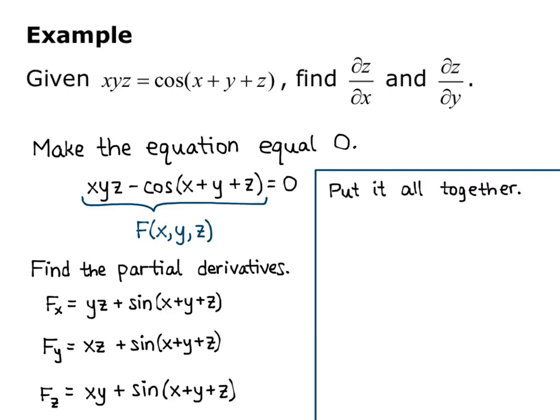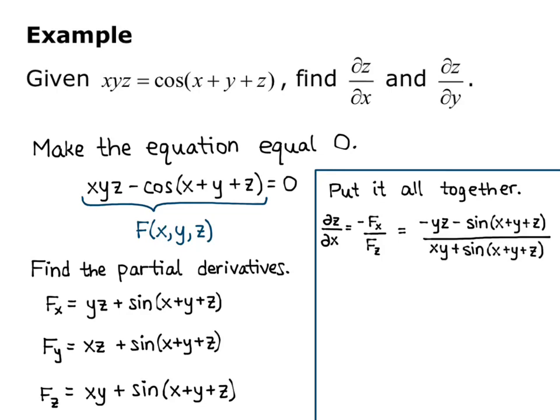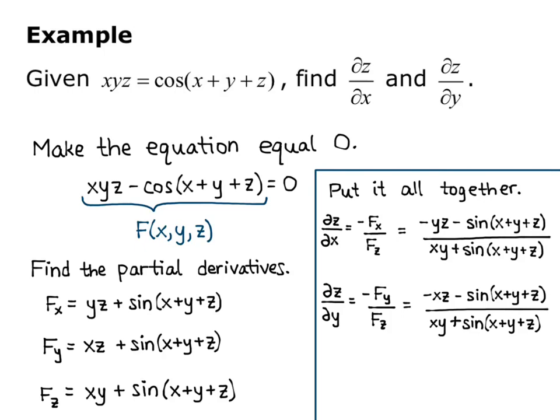Now we put it all together. The partial of z with respect to x equals negative F sub x over F sub z. Distributing the negative in the numerator, this equals negative yz minus sine of x plus y plus z, all over xy plus sine of x plus y plus z. And the partial of z with respect to y equals negative F sub y over F sub z, which gives negative xz minus sine of x plus y plus z, all over xy plus sine of x plus y plus z.